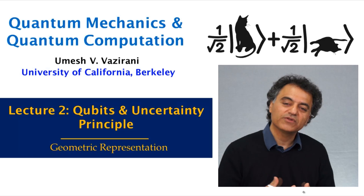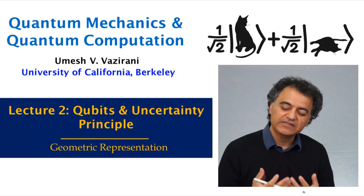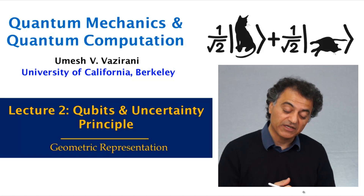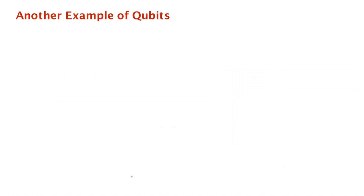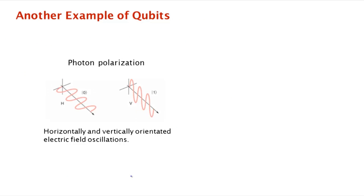Let's see an example of how this actually happens in real life. To do this, let's look at another example of a qubit. It turns out that photons have a property called polarization which carries a qubit of information.